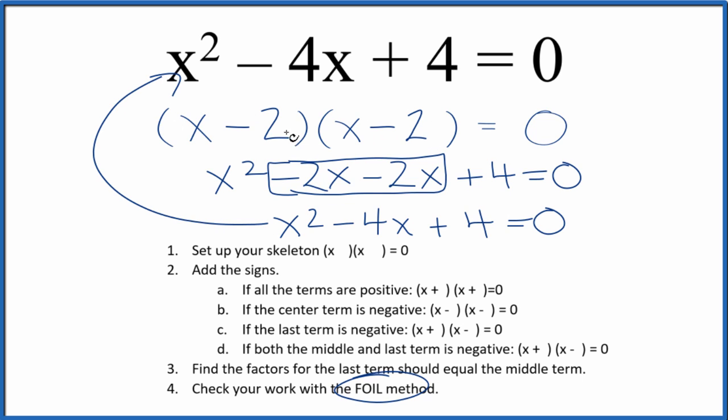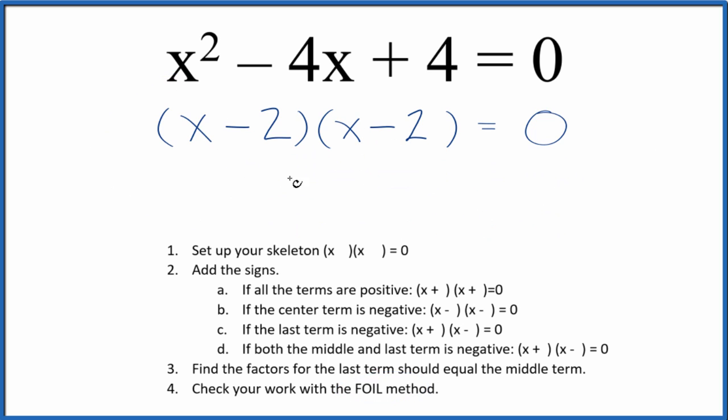There's another way that we could write this x minus 2 times x minus 2. So we could say x minus 2 equals 0, x would equal 2. So if you put 2 in for x here, 2 squared minus 4 times 2 plus 4, that all adds up to 0. So this is the correct value.